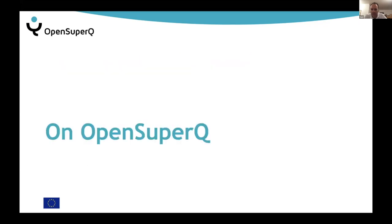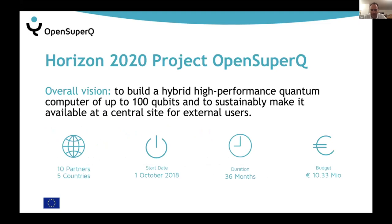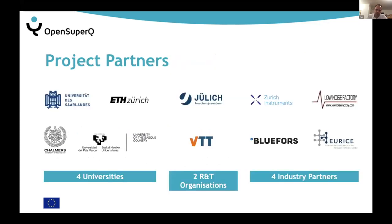In the flagship project I'm coordinating — now in its third year — we have 10 partners from five countries, and we want to get to a level of 50 to 100 qubits: a real quantum computer you cannot easily simulate, made available at a central site. This is a good snapshot of the European public-private landscape. There are four universities — actually three right now, since my old place has withdrawn — two research and technology organizations similar to national labs in the US, and four industry partners, all small and medium enterprises.